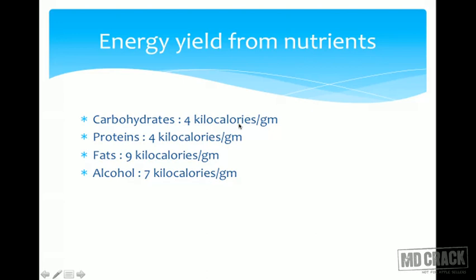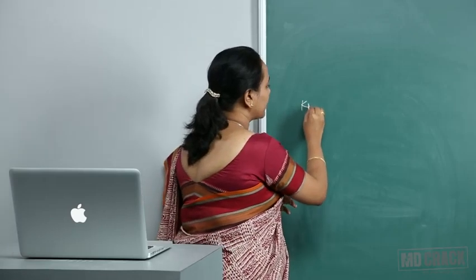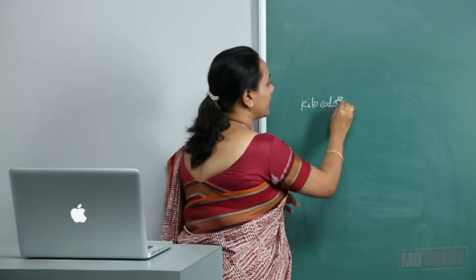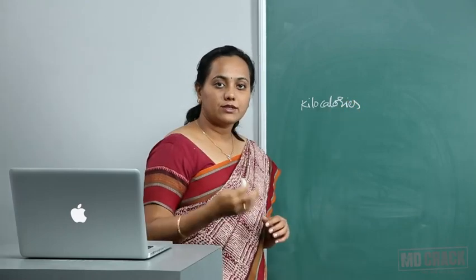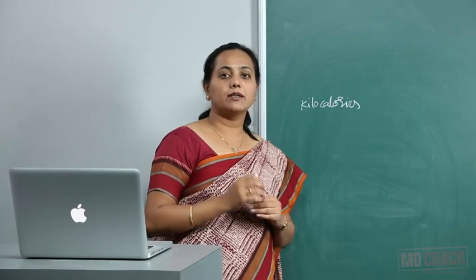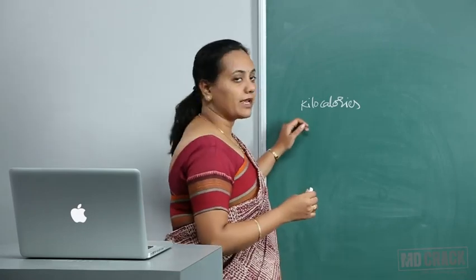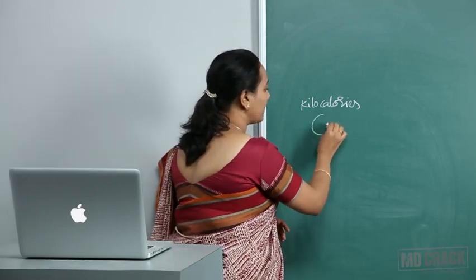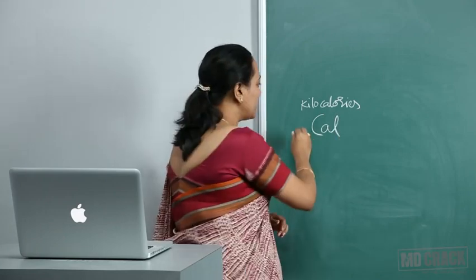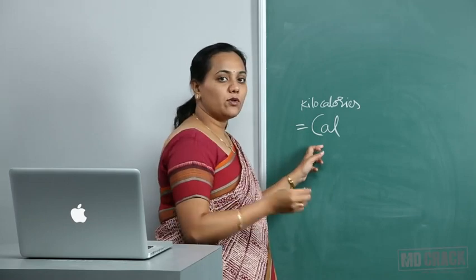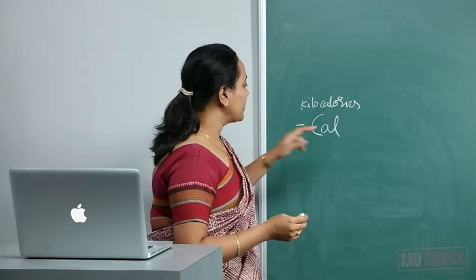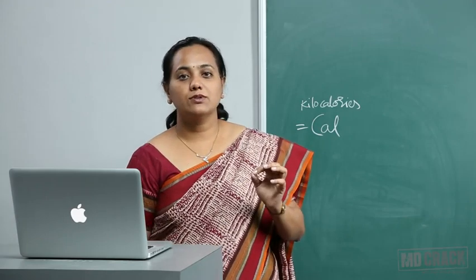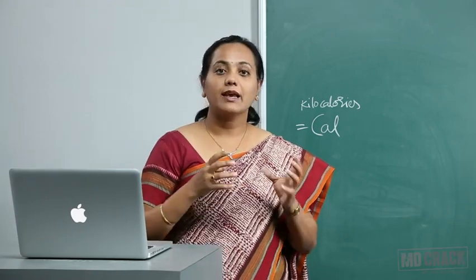Carbohydrates give 4 kilocalories per gram. Regarding energy units, we use both joules and calories. A capital 'C' Calorie is equivalent to a kilocalorie, while a small 'c' calorie is a calorie. Most of the time in nutrition we write kilocalories, but you will often just see 'calories per gram' being used.